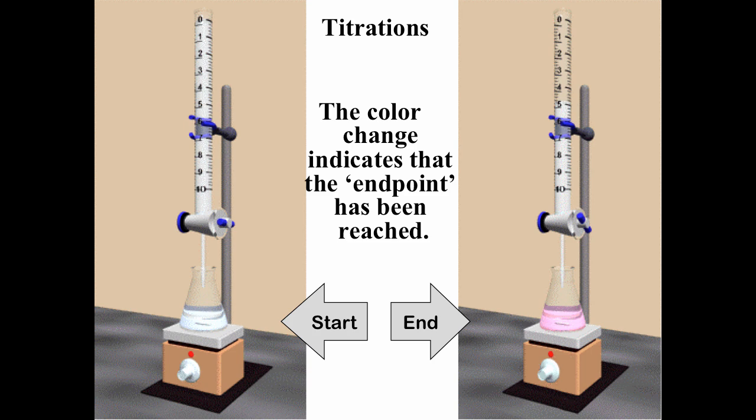In this case, phenolphthalein is being used as an indicator, and you want to just see a light pink color. Whenever you see a pink color, it means you've reached the equivalence point — one drop to reach that pink color, as long as it's persistent. But it is very, very sensitive.